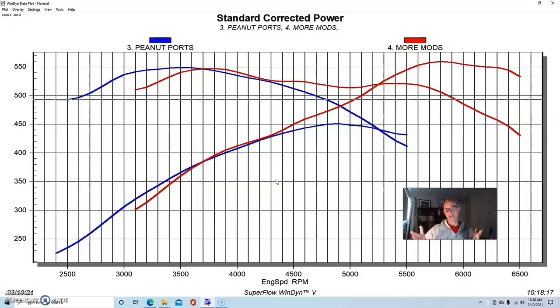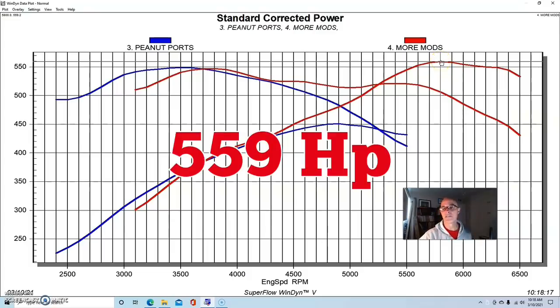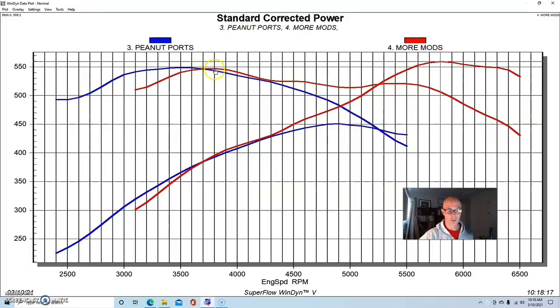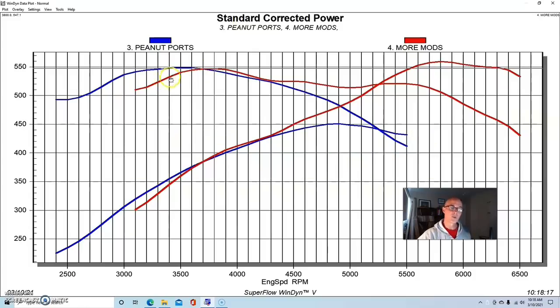As you can see, the combination of the additional cam timing and our cylinder head change pushed power up higher. We were now making peak power closer to 6000 RPM, actually at 5800, where we made 559 horsepower. Peak torque was still down here below 4000 RPM, that's the dual plane intake working, at 547 foot-pounds. As you can see, there was a loss below that compared to the previous combination with the peanut port heads and the milder camshaft. We would expect that because we're pushing power production, concentrating more at the higher RPM with that kind of camshaft.